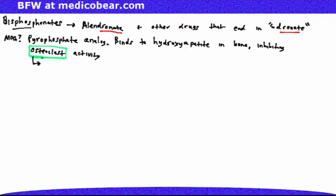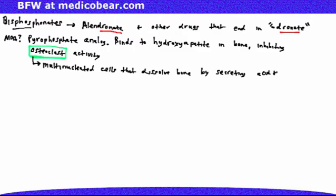A brief review of osteoclasts: these are multinucleated cells that dissolve bone by secreting acid and collagenases. A way to remember that osteoclasts dissolve bone is by looking at that little C in osteoclasts and making the connection that osteoclasts crush or dissolve bone.